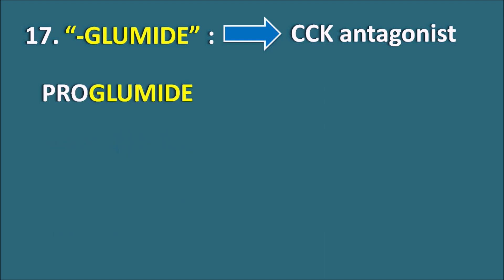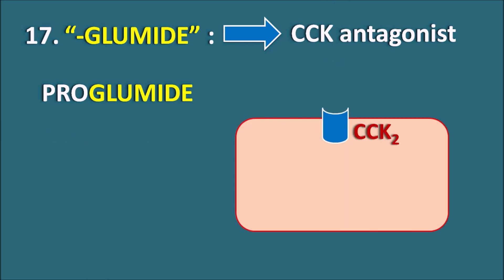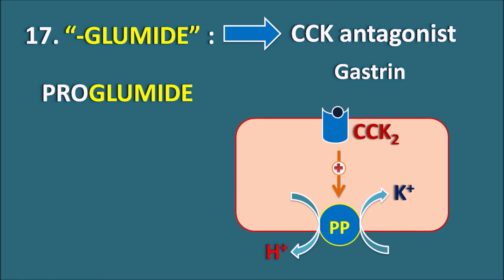Proglumide is a non-selective cholecystokinin antagonist developed as an anti-ulcer drug. Within the gastric parietal cells we can observe CCK2 receptors on which gastrin can act. Gastrin binds to these cholecystokinin receptors and promotes the expression of the proton pump — the H+/K+ ATPase pump — thereby increasing the number of proton pumps and increasing gastric acid secretion.